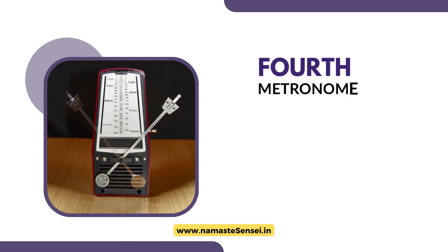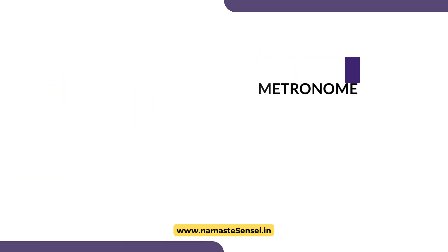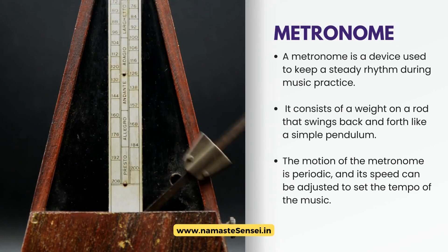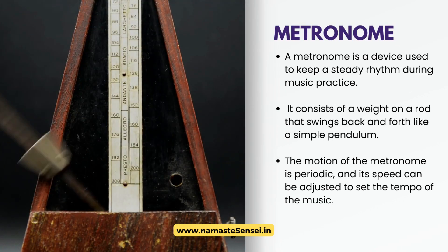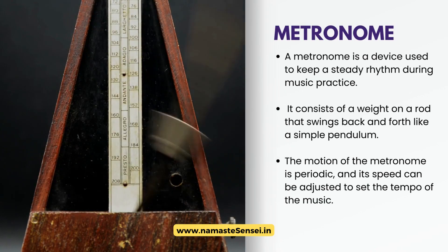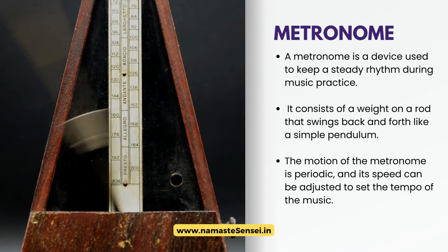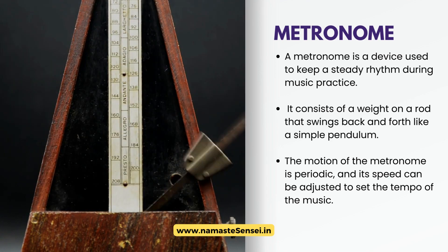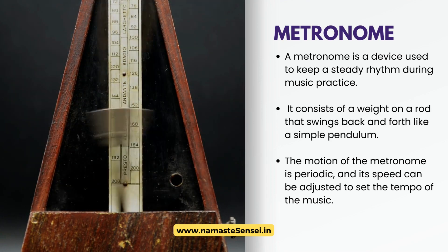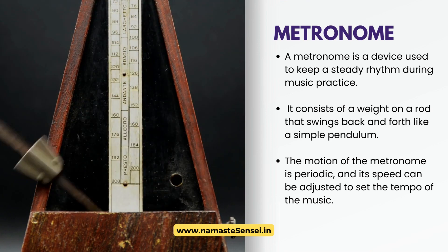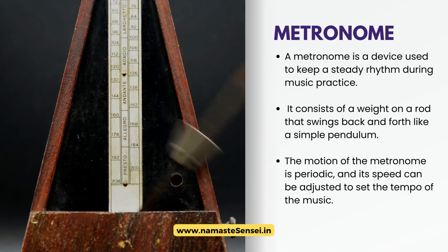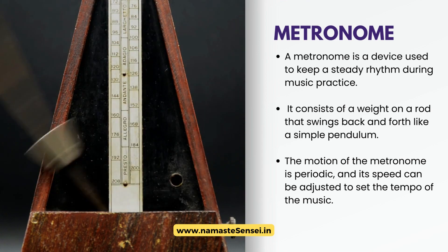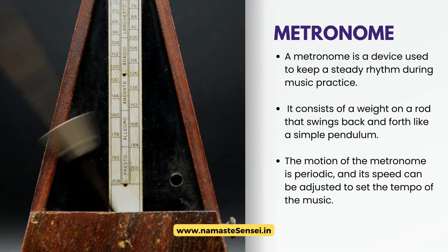Fourth, Metronome. A metronome is a device used to keep a steady rhythm during music practice. It consists of a weight on a rod that swings back and forth like a simple pendulum. The motion of the metronome is periodic, and its speed can be adjusted to set the tempo of the music.